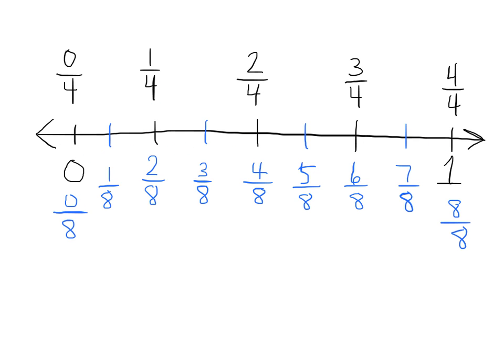We should be able to see some equivalent fractions here. Let's start with this one right here — here's three-fourths. We can see that three-fourths is equivalent to six-eighths, because three-fourths and six-eighths live at the same location on the number line.